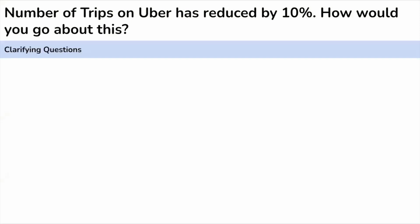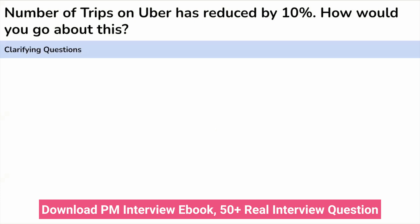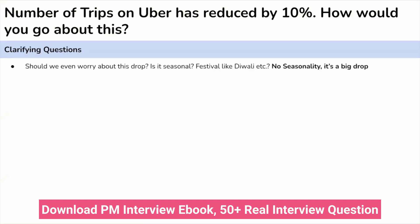As usual, we'll start with the clarifying questions so that we have a better understanding of the problem statement. The first question we should ask is: should we even worry about this drop? Because it may happen that this kind of drop is usual in some season, like a festive season or some seasonality when drivers are not there on the platform. The interviewer confirmed that the seasonality is not there and this is a big drop for them.